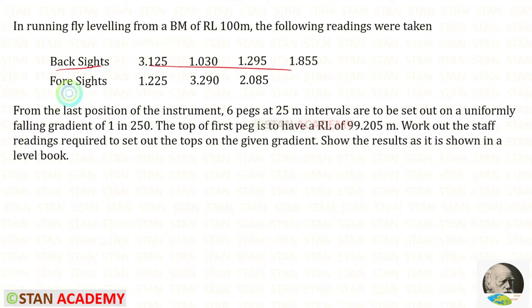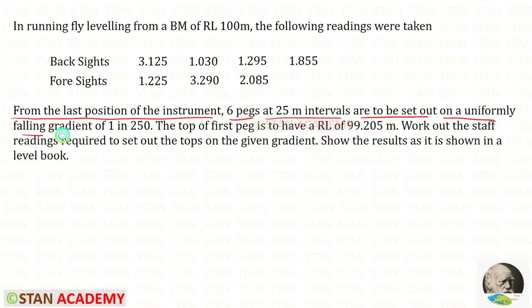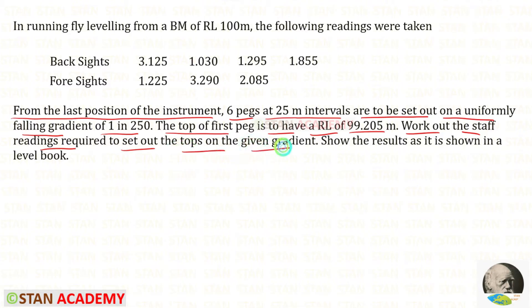Backsights and foresights are given. From the last position of the instrument, six pegs at 25 meter intervals are to be set out on a uniformly falling gradient of 1 in 250. The top of the first peg is to have a reduced level of 99.205 meter. Work out the staff readings required to set out the tops on the given gradient, and show the results in your level book.